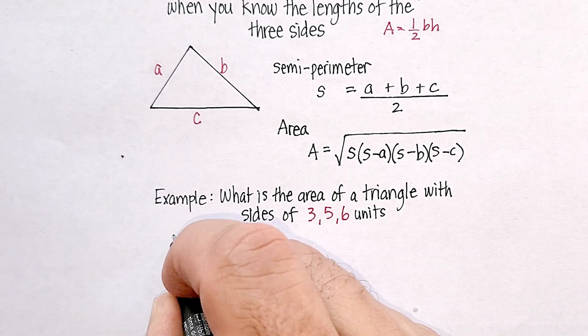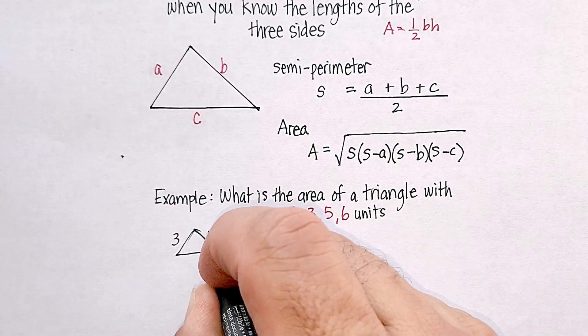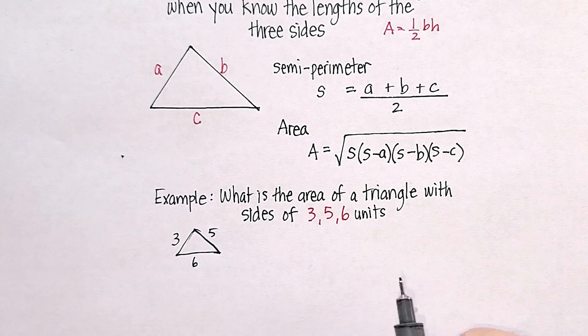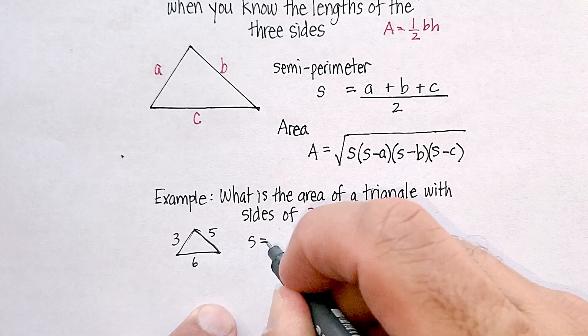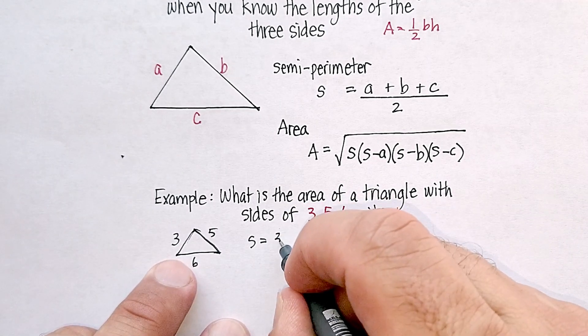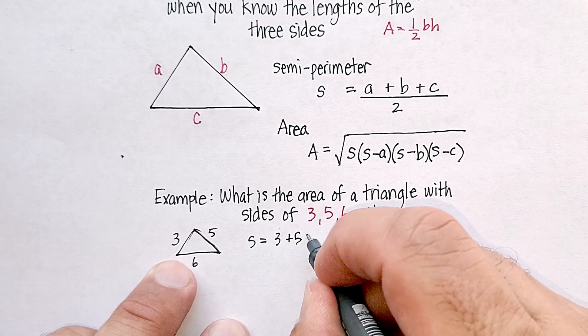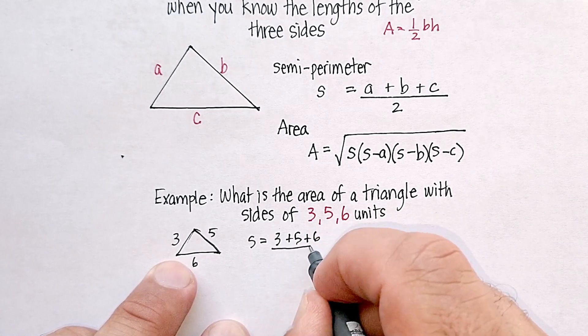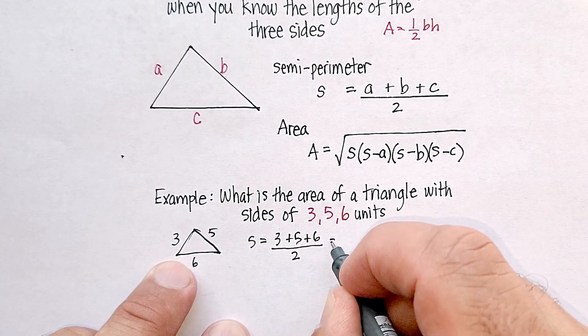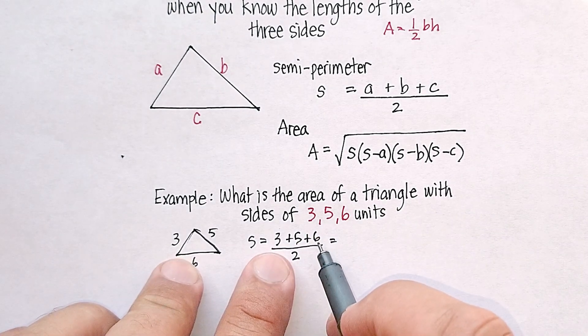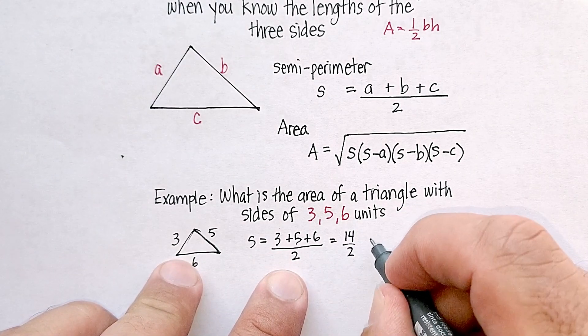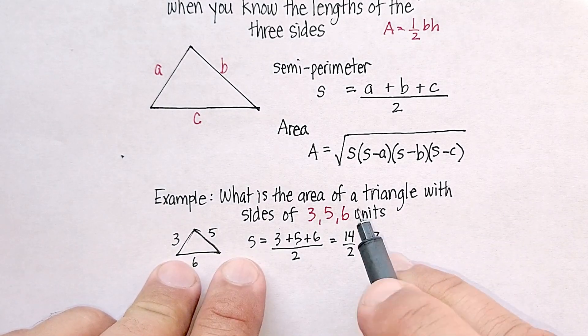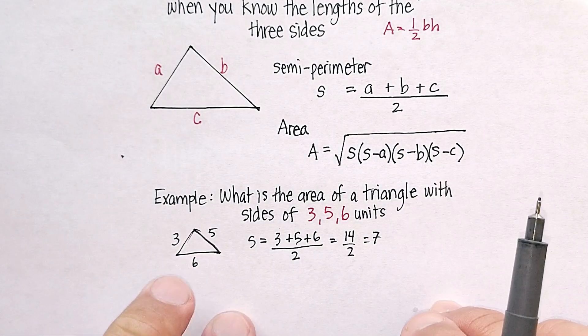We know that the sides are 3, 5, and 6. So let's calculate the semi-perimeter, which is S. We're going to say 3 plus 5 plus 6, all divided by 2. That's going to give me 14 divided by 2, which is 7. So that is our S, our semi-perimeter.